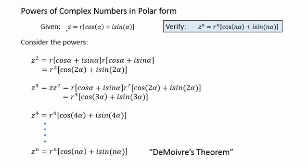Given a complex number in polar form, we want to verify that the nth power of z is given by this expression. To do so, let's consider the following powers, starting with z squared. z squared would be a multiplication by itself. It would be z times z.